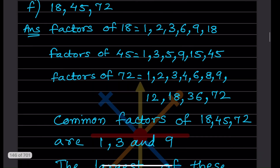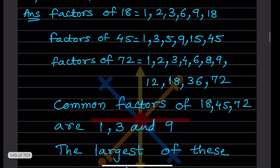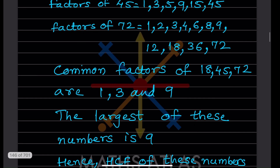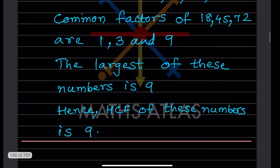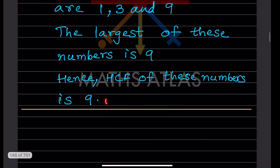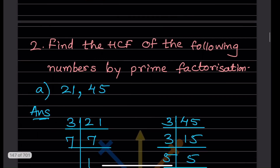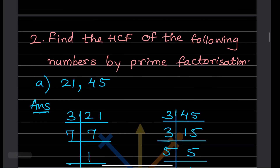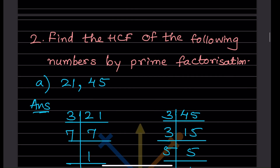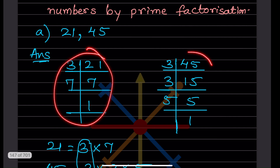These are similar examples — only the numbers are different, so no detailed explanation is needed. The answer is given: the largest common factor is 9. That completes the listing method. Now we find the HCF by the prime factorization method.